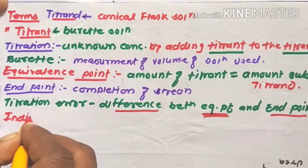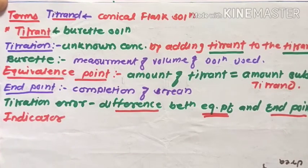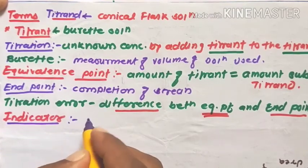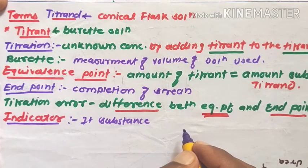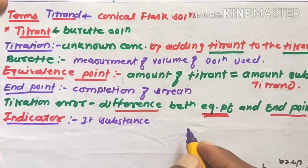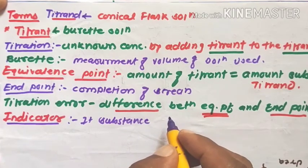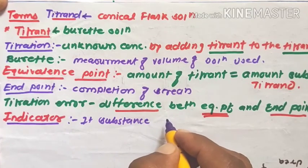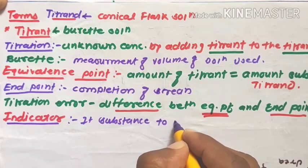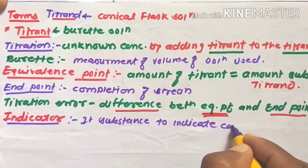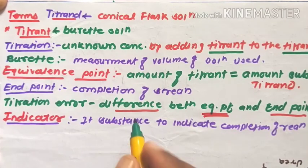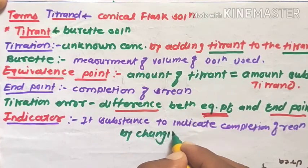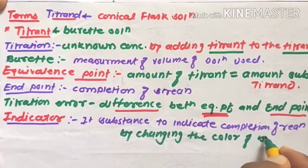Indicator: it is a substance which is used to indicate the completion of reactions in titration by changing the color of the solution.